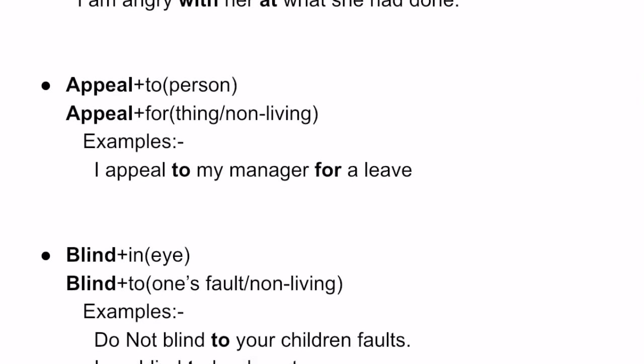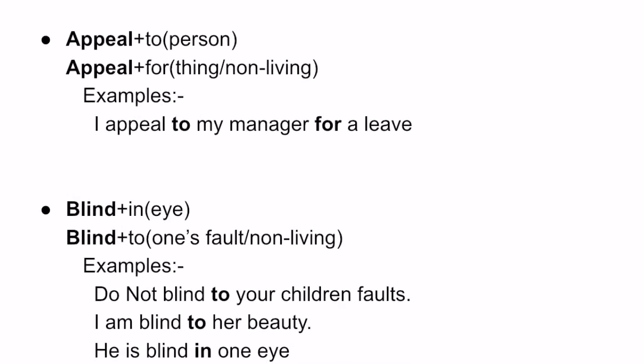The next word is 'blind.' We can see two different kinds of prepositions coming with the word 'blind': 'in' and 'to.' 'Blind in' generally refers to a physical disability. For example, 'He is blind in one eye' — that means one eye is facing a blindness problem; that is the literal meaning. Coming to 'blind to' — this means some people are ignorant about faults. For such cases, we use 'blind to.'